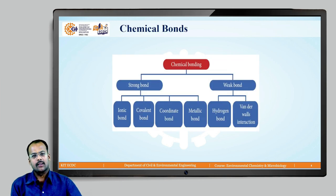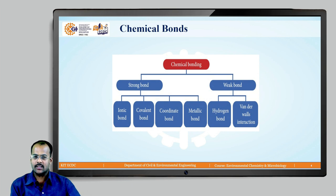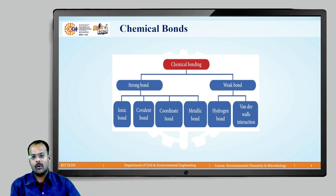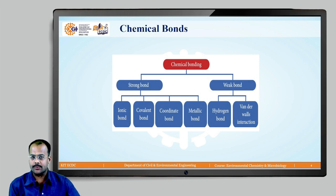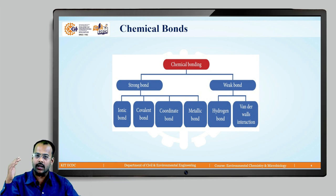Bonding is important in human life as well as in non-living things. In living things and non-living things everywhere, bonding is important. Unless and until a bond is formed, we cannot come to any kind of solution. There is chemical bonding, there is physical bonding, there is biological bonding. Today we are going to see bonding in terms of chemical things.